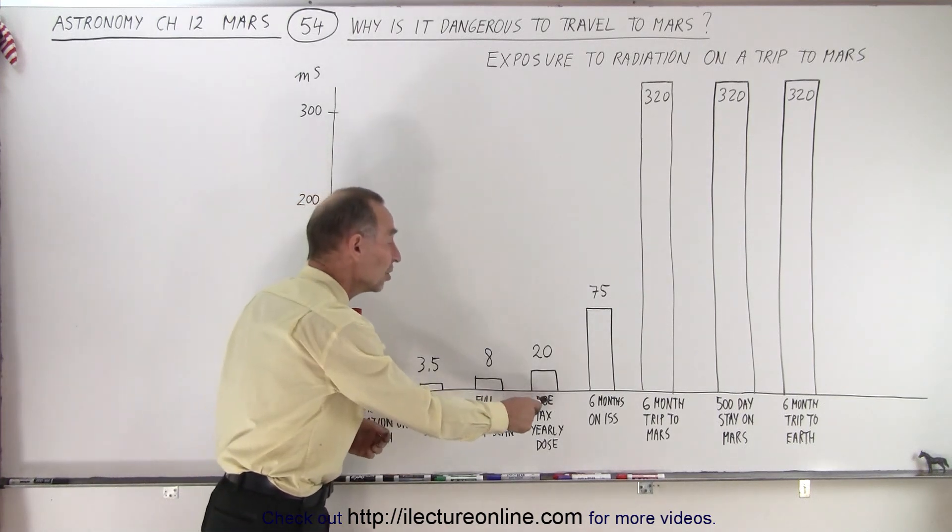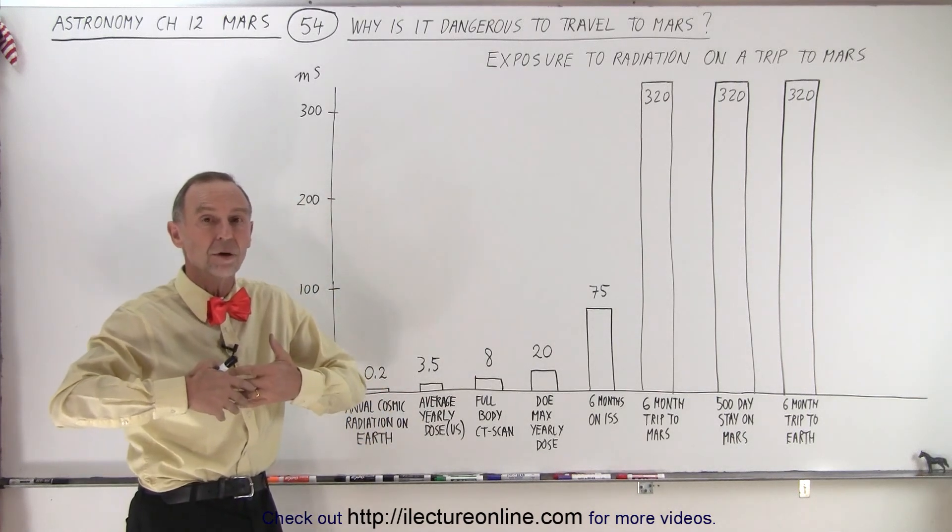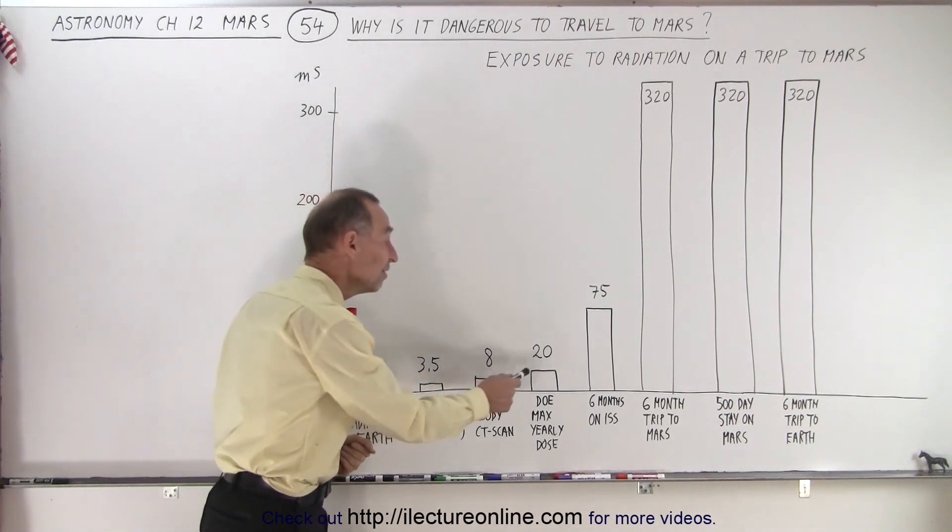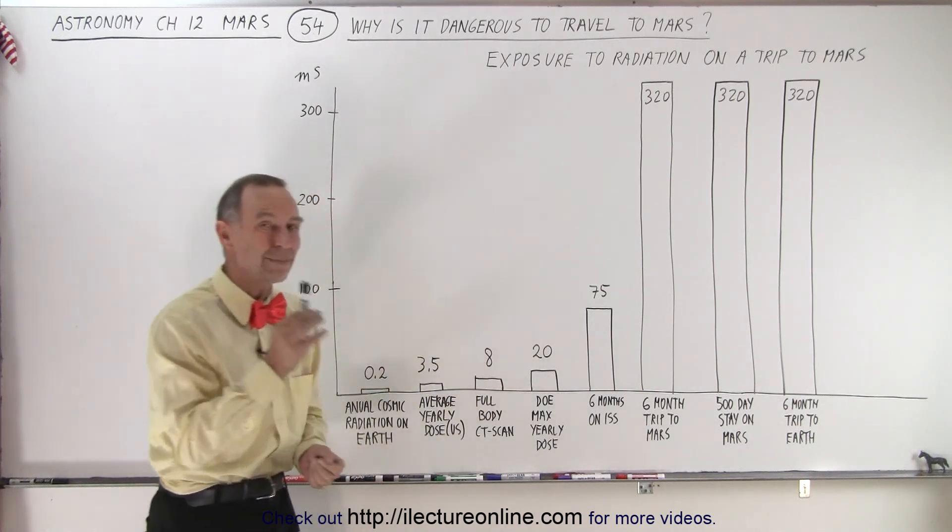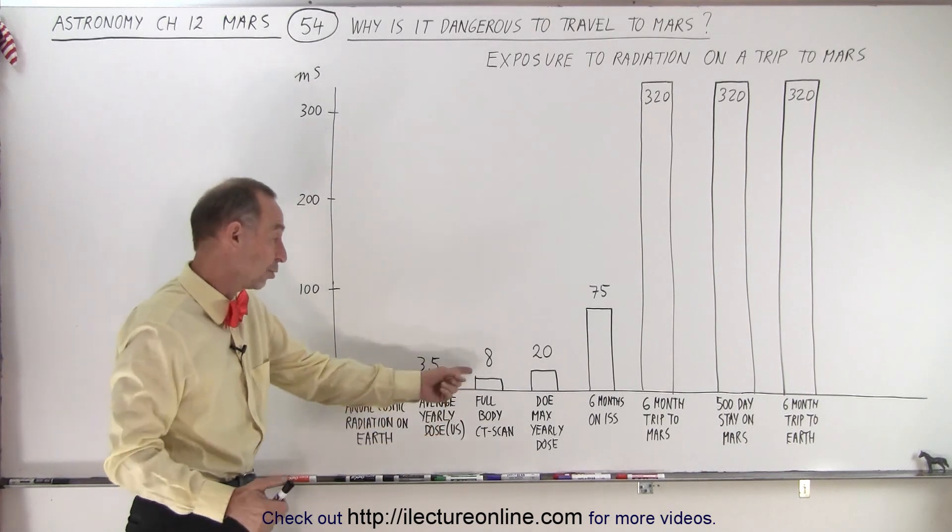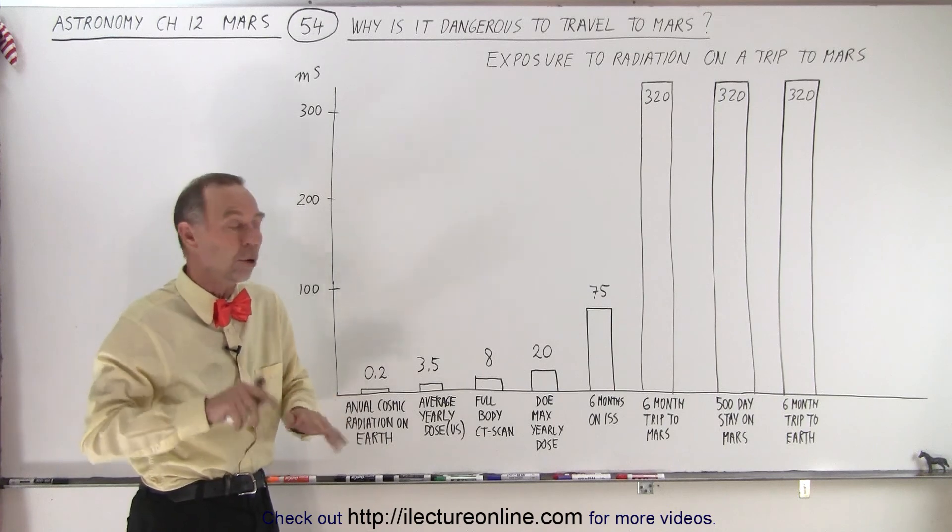Notice the Department of Energy says that for any employee working around nuclear material, like in a nuclear power plant, you should not receive more than a total of 20 millisieverts during an entire year, which is about 2.5 CT scans. So that's the maximum allowed dose.